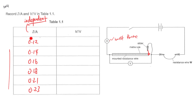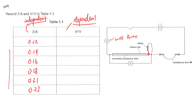Another thing to take note of: all readings for the independent variable have to be either ascending or descending. It cannot be the case where you put, for example, 0.23 and then realize you missed one point and go back to put 0.21 at the last row. If that happens, marks will be deducted.